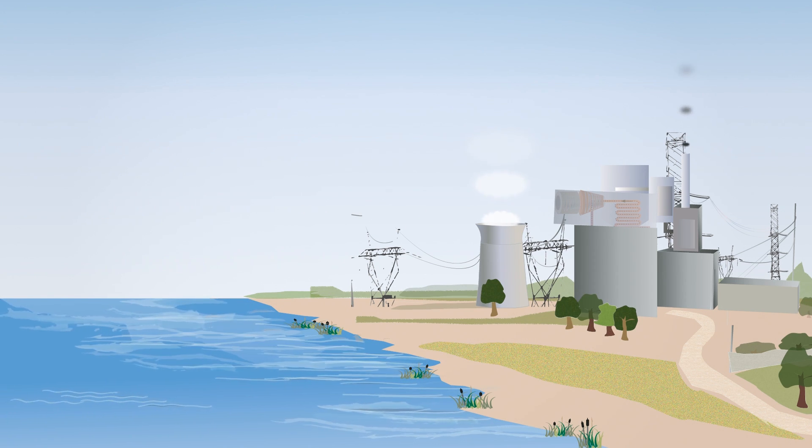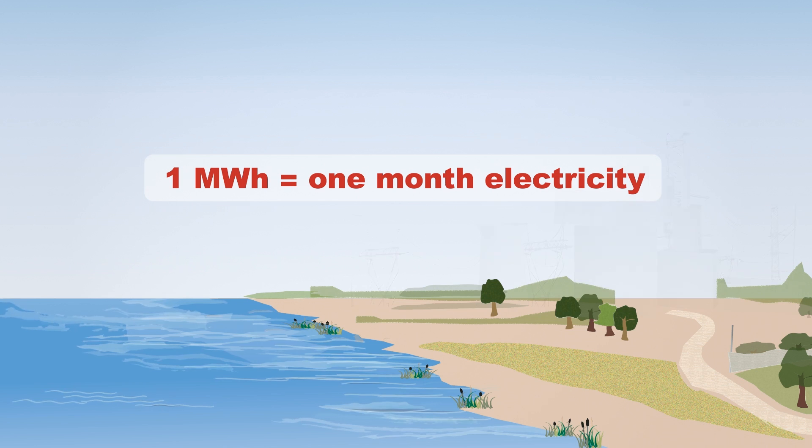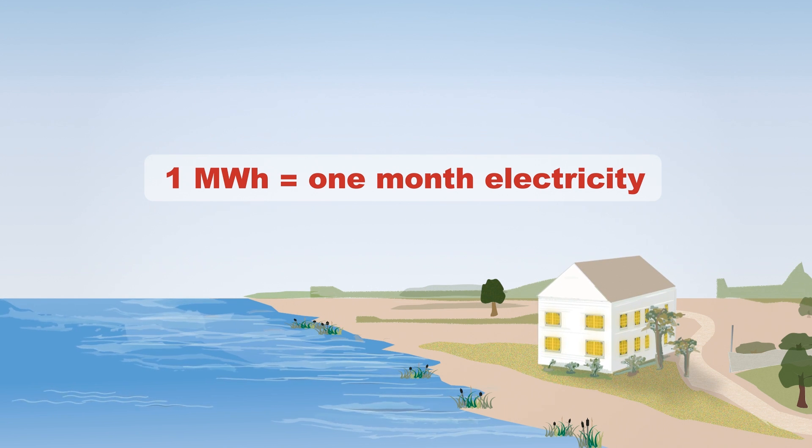A thermoelectric power plant's water use can be measured in gallons per megawatt-hour of electricity. A megawatt-hour is a little more than it takes to power an average household for a month.